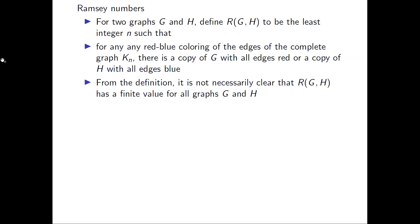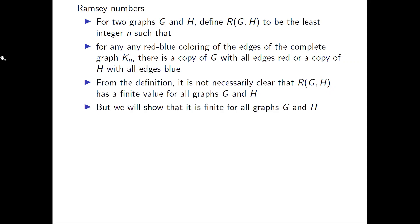When we see this definition for the first time, it's not necessarily clear that R(G, H) will even have a finite value for all graphs G and H. For example, when G and H are complete graphs, it's not clear from the definition that R(G, H) should even have a finite value. We're going to need to prove that, by showing a general upper bound on R of complete graphs G and H.